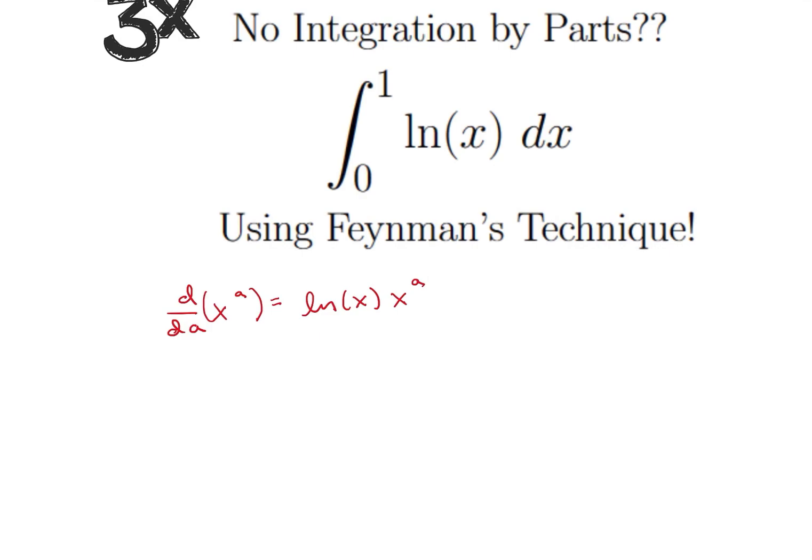So what I notice here is if I had the integral from 0 to 1 of x to the a dx, and I call that i of a. Okay, so this is a function of a. So whatever we change a to may change our solution here.